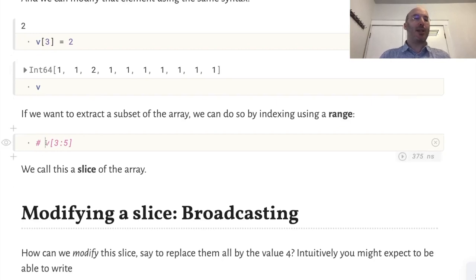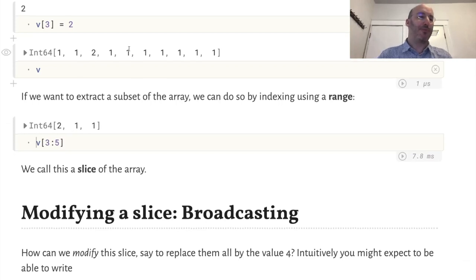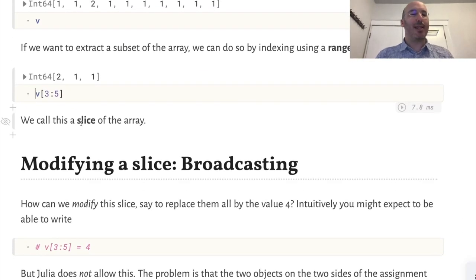If we want to extract a subset, several elements of the array, we can do so by indexing using a range. A range is written with a colon. v[3:5] will extract three elements starting at position 3 and finishing at position 5. This is one reason why 1-based indexing is useful because these numbers exactly correspond to the positions in the array. This is called a slice of the array.